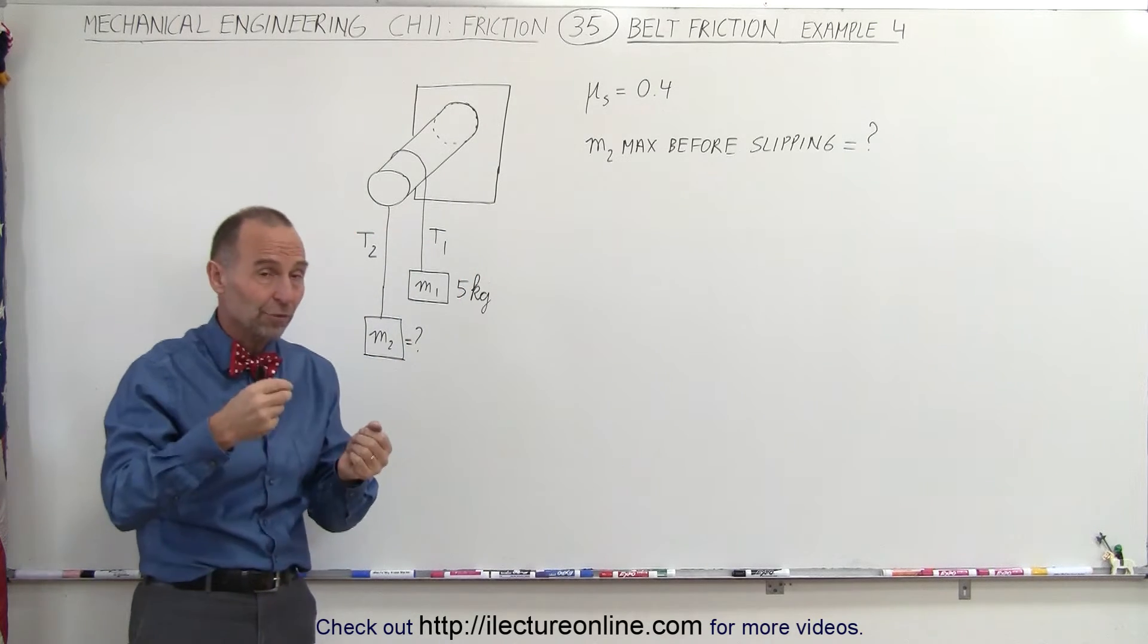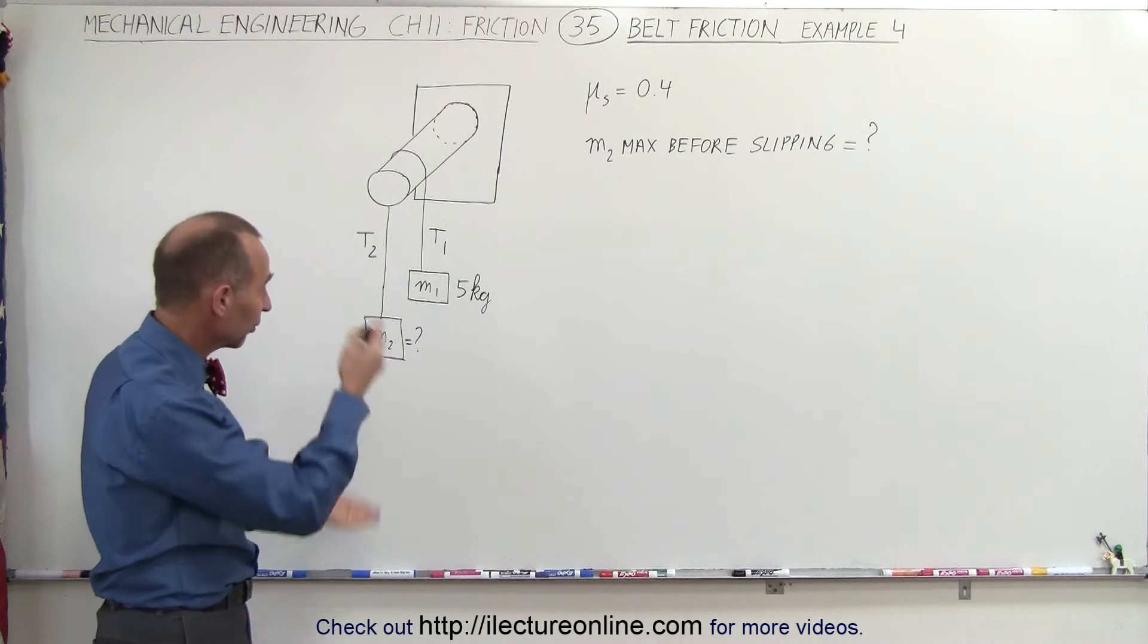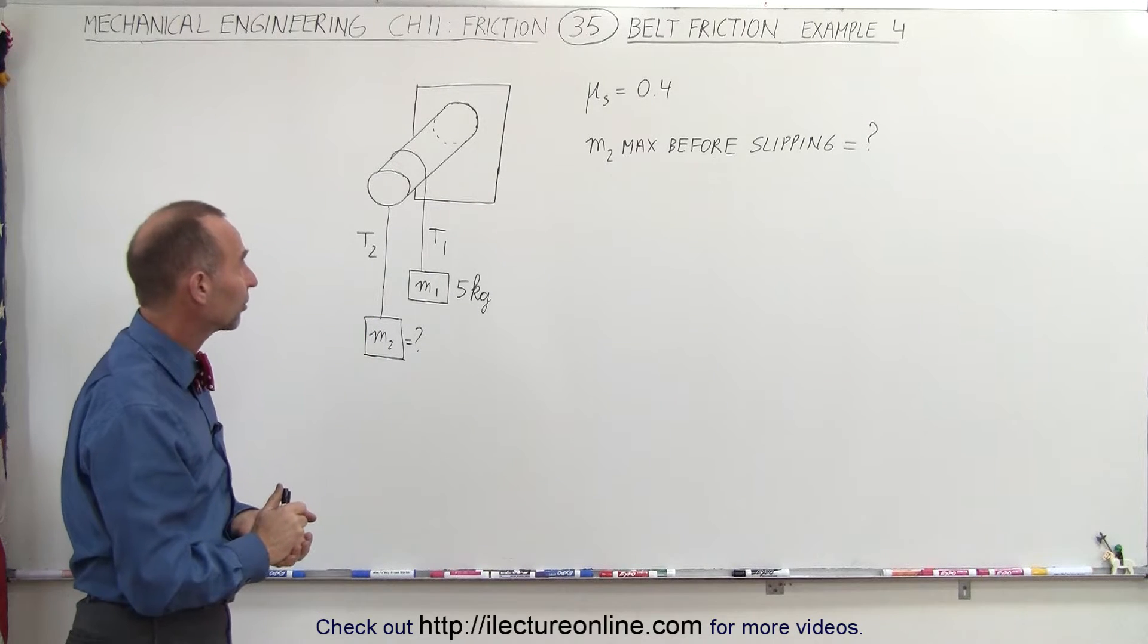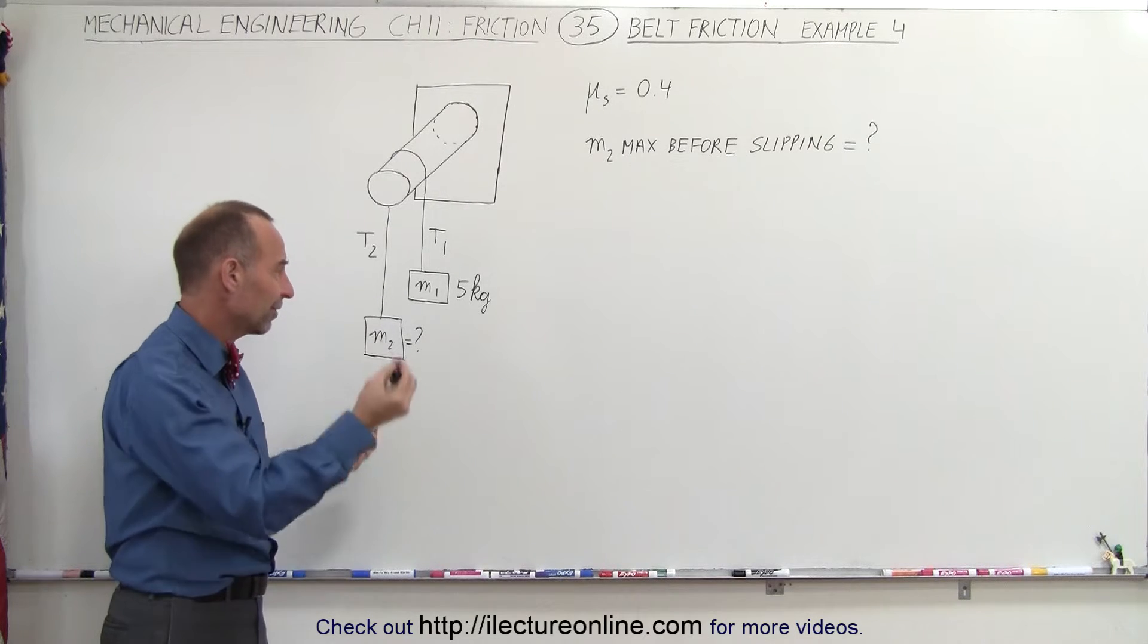Obviously once they start moving the coefficient of kinetic friction is smaller and the thing will begin to accelerate, the whole system I should say will begin to accelerate. So what's the maximum m2 we can attach here before everything starts slipping?